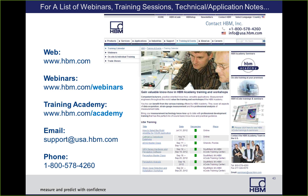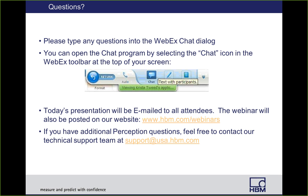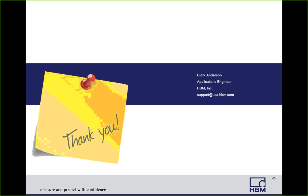That ends the Catman sensor database webinar. There are many more sources for additional information on similar or other topics, training sessions, and application notes, all available at www.hbm.com. There's a Catman Easy training course scheduled for October 16th and 17th in Southfield, Michigan — if you're interested, please go to the training and events section of the website and register. If you have any specific questions, you can email support at USA.hbm.com or call 1-800-578-4260.